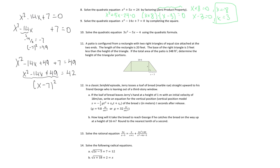A little secret: that number from dividing the middle coefficient by 2 (which was negative 7) is the number that appears next to x in the factored form. Now to solve for x, square root both sides — and be careful, when you introduce a square root you must put plus or minus. So x minus 7 equals plus or minus square root of 42. Adding 7: x equals 7 plus or minus square root of 42.